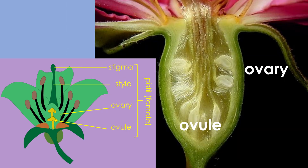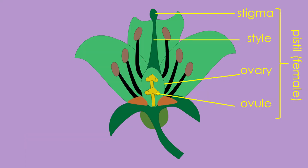Ovary: the enlarged base of the pistil that contains the ovules, or the eggs. After fertilization, the ovary develops into a fruit and the ovules become seeds. The pistil is the central structure in a flower involved in seed production, and it involves the stigma, style, and ovary.